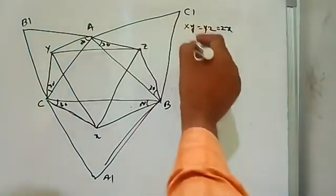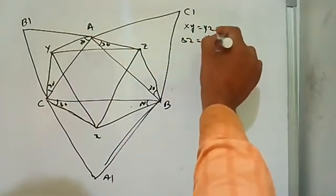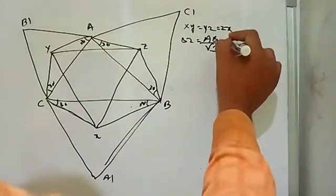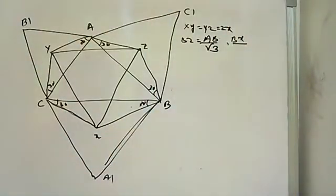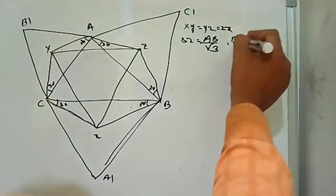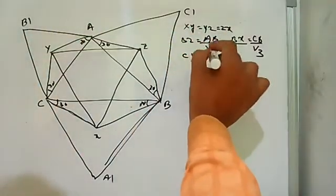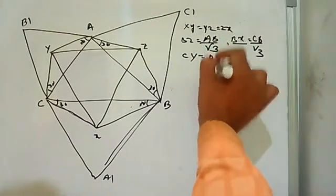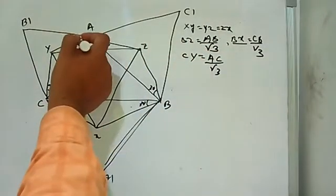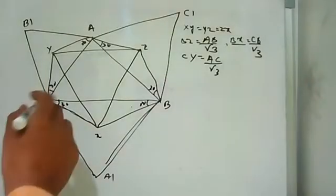And BZ is AB divided by root 3. BX is also AB divided by root 3, and CY is also AB divided by root 3.